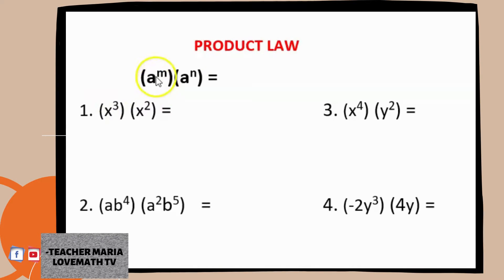Suppose we have here a raised to m and then a raised to n. As you can see, they have the same base. So you just have to copy the same base or the common base which is a, and then you just have to add the exponent m plus n.